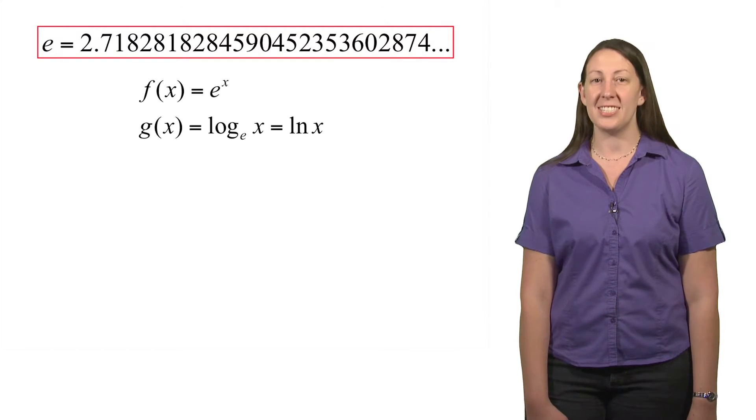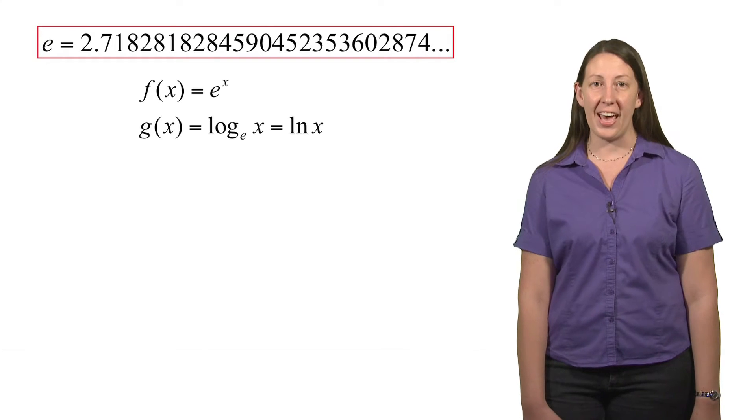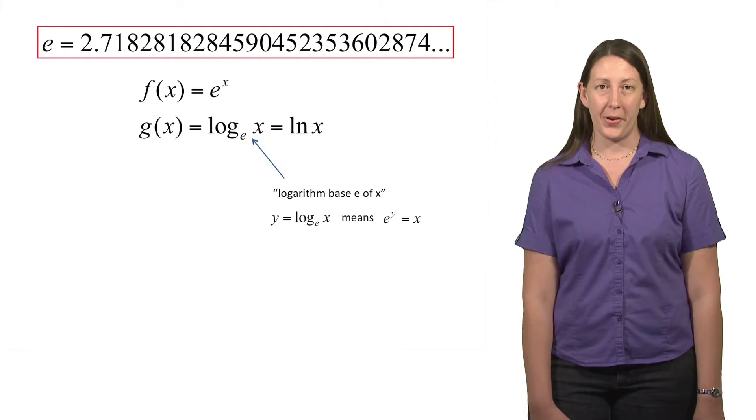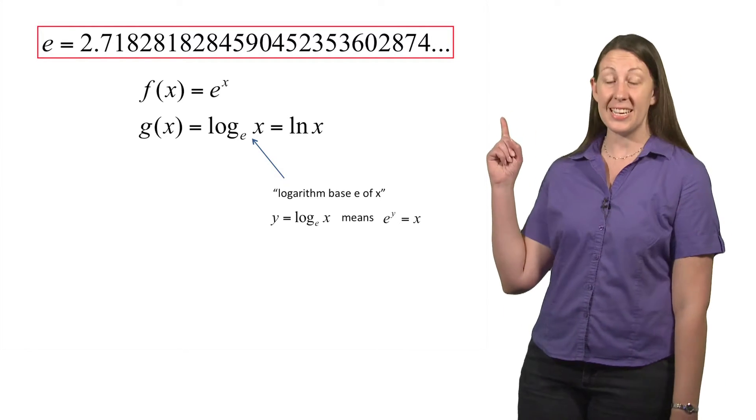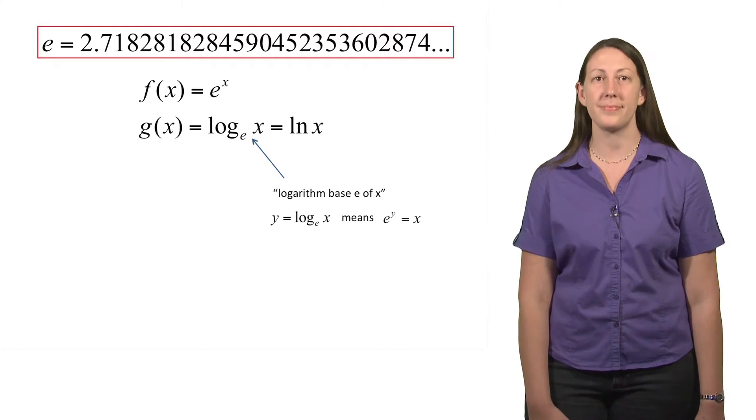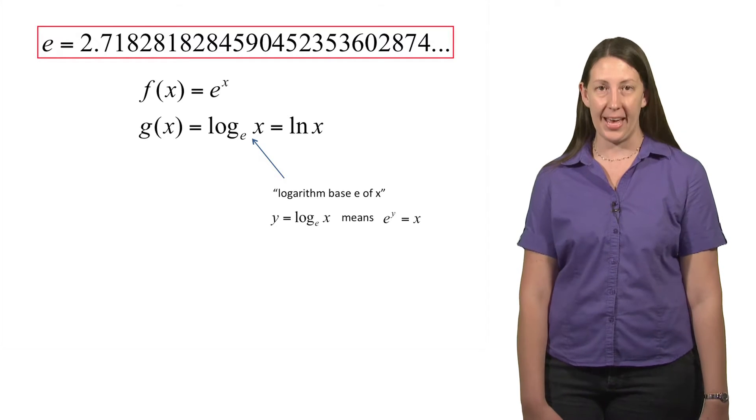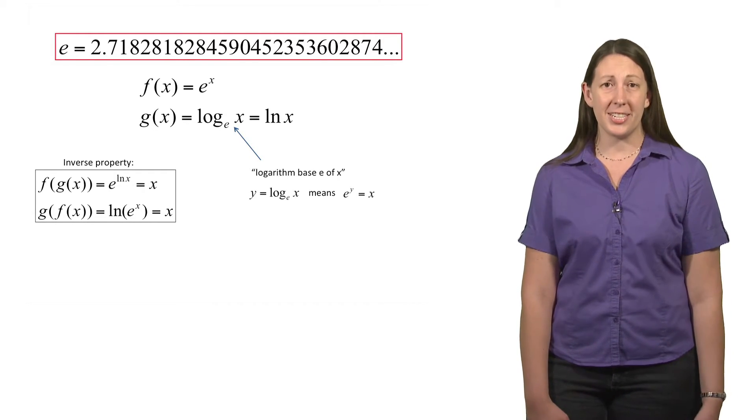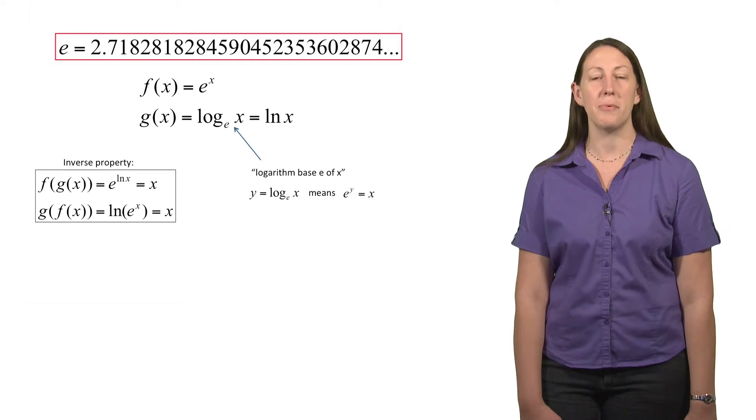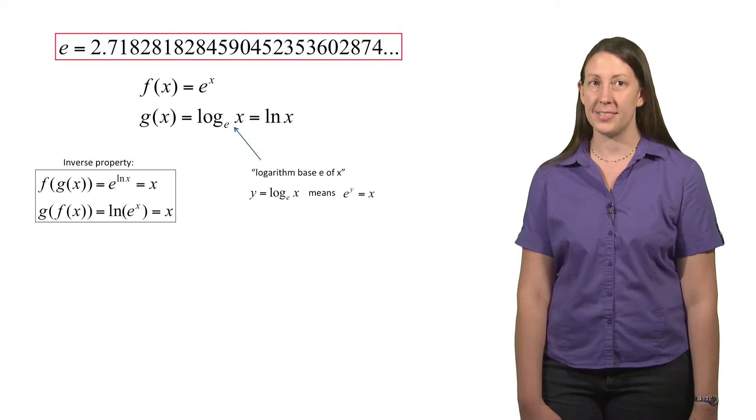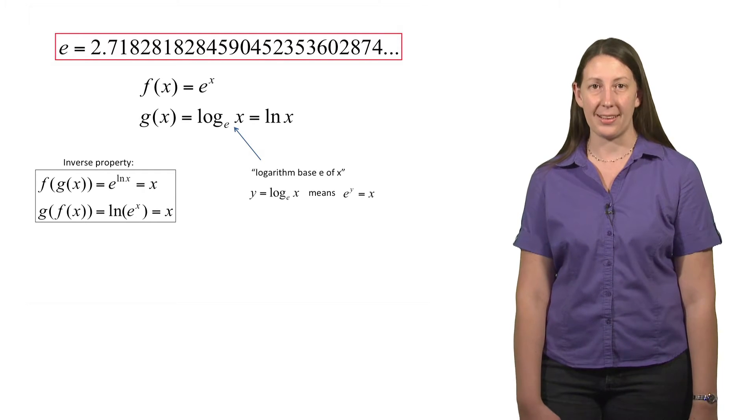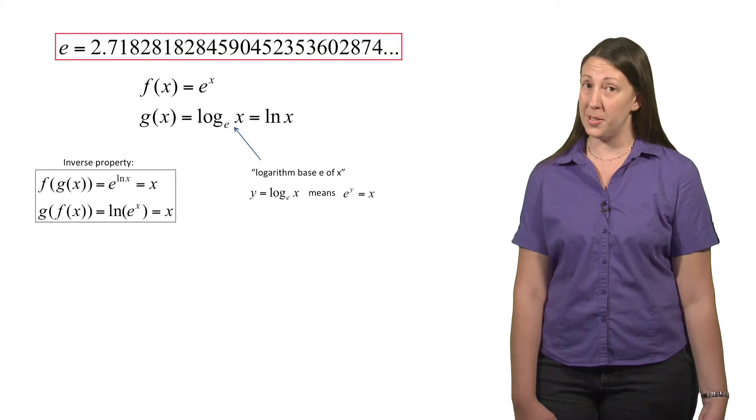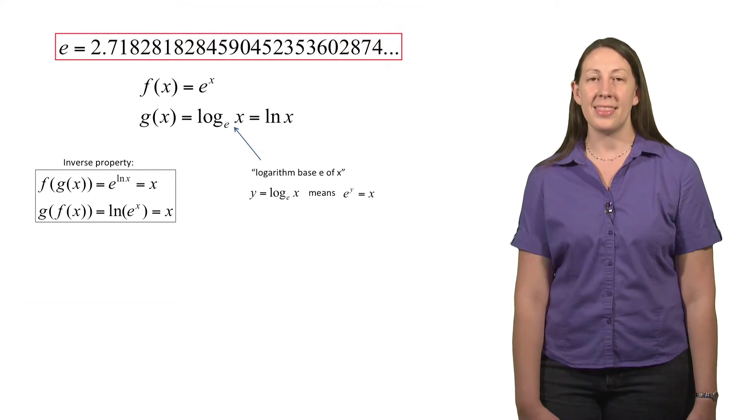The related function to the exponential function is the logarithm function. Here you see our logarithm function, g(x) equals log base e of x. We also denote this as ln. The ln stands for natural logarithm, or it's a special logarithm function where the base is e. The base is that little number written as a subscript of the logarithm. These two functions are very closely related to each other, namely, they're inverse functions for each other. Inverse functions have the property that when we compose them together, they undo each other, and we're just left with x. For example, f(g(x)), or e to the ln of x just gives me x. Same thing if I compose them in the opposite order: g(f(x)) equals ln of e to the x power, and those exponentials and logs again undo each other, and I'm just left with x. That's the inverse property of functions.